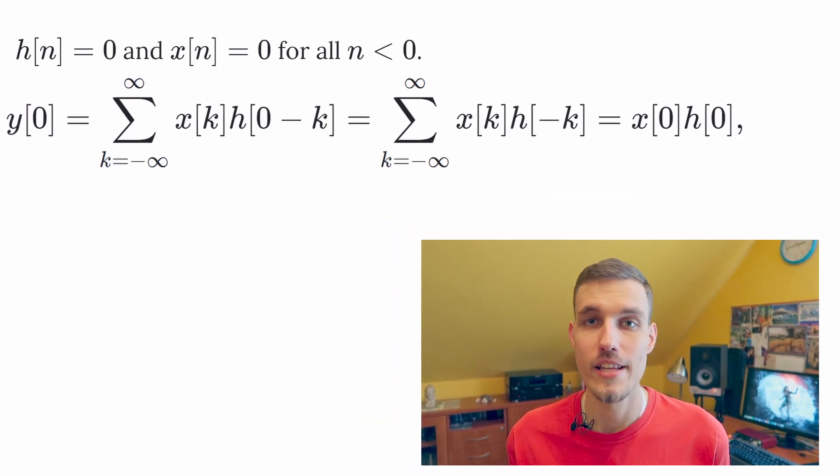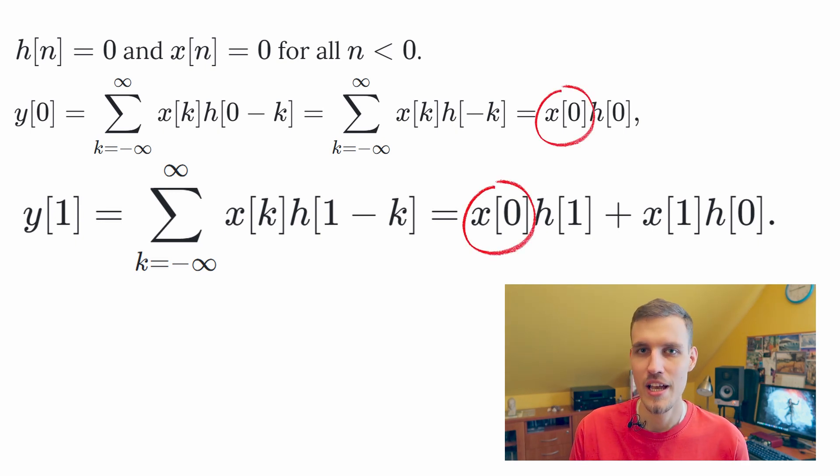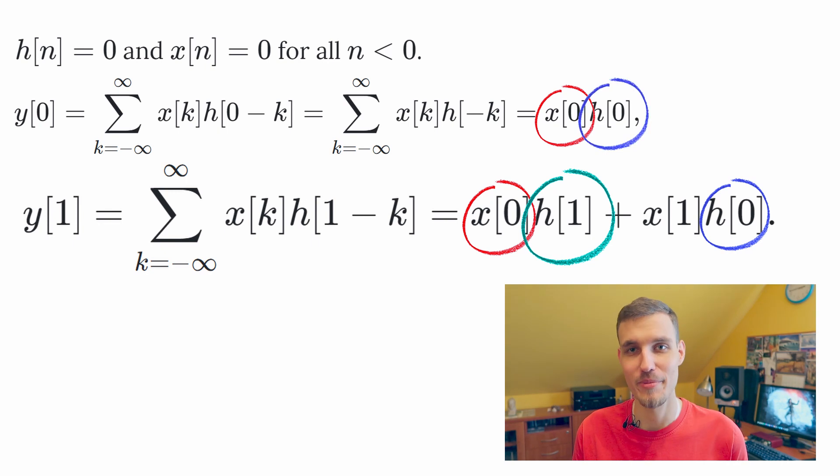What happens if we increase our time index? Then we can see that somehow our x of zero, our first sample of the input signal, has moved further down the line because it now weights the second sample of the impulse response. At the same time, we add to it the first sample of the impulse response weighted with the second sample of the input signal. It means that each sample that enters the buffer, the filter's buffer, weights its according sample of the input response. And the outcome is summed over all viable products at the given time index n.